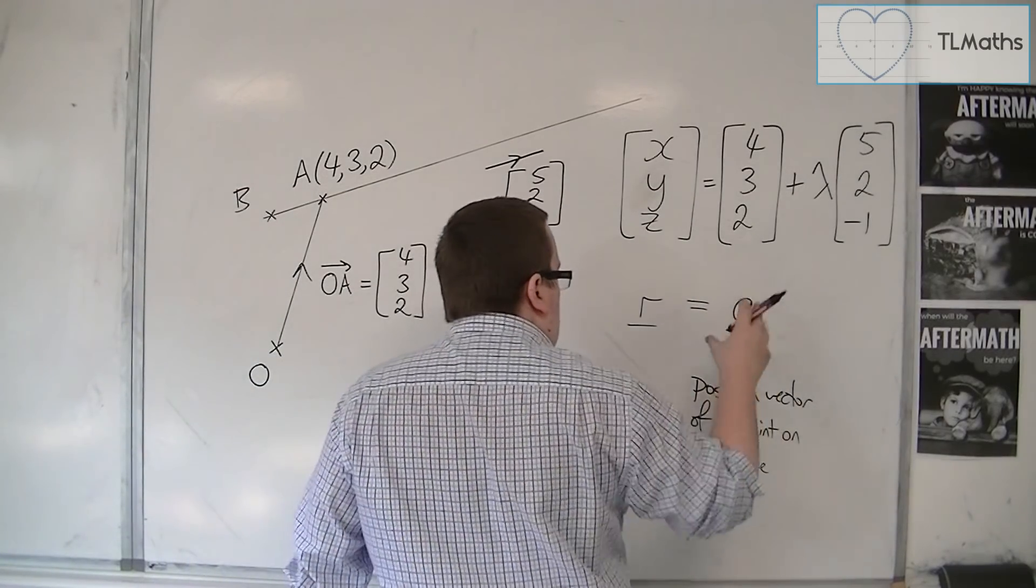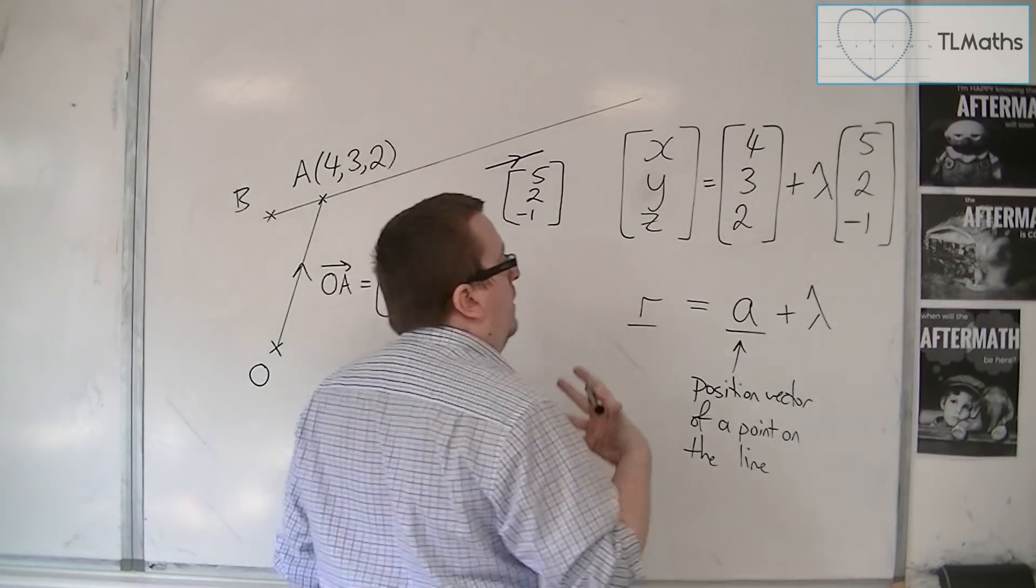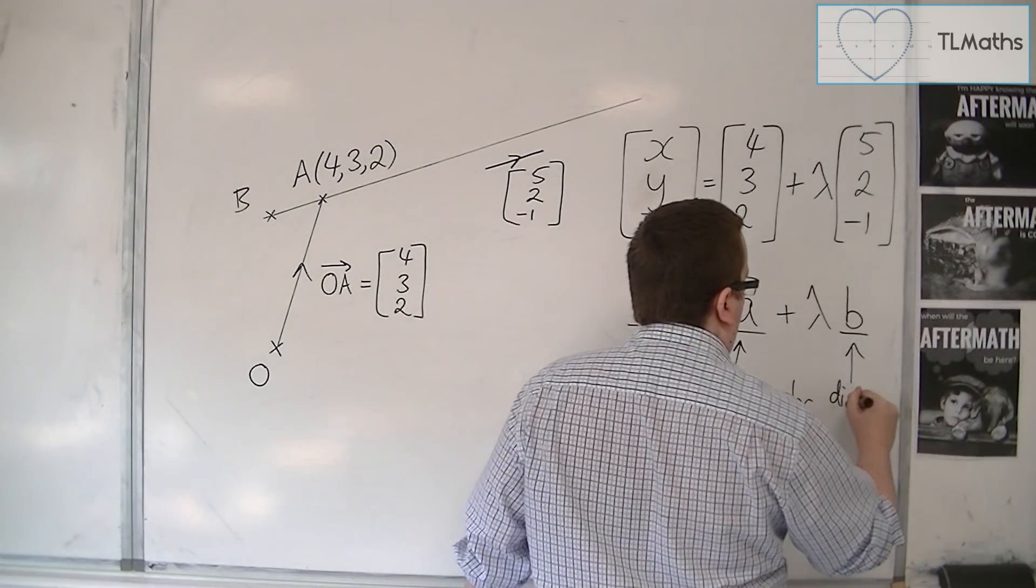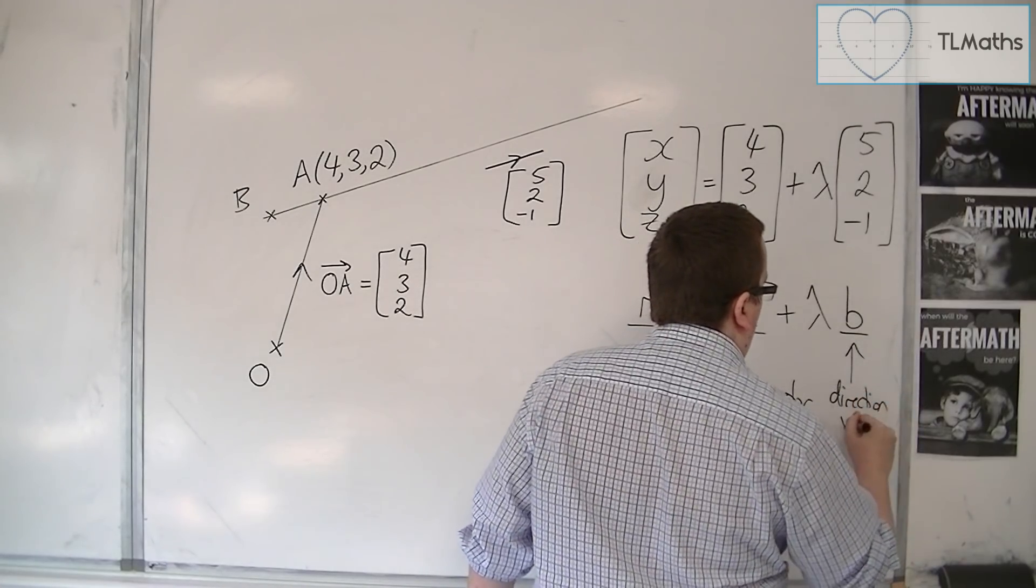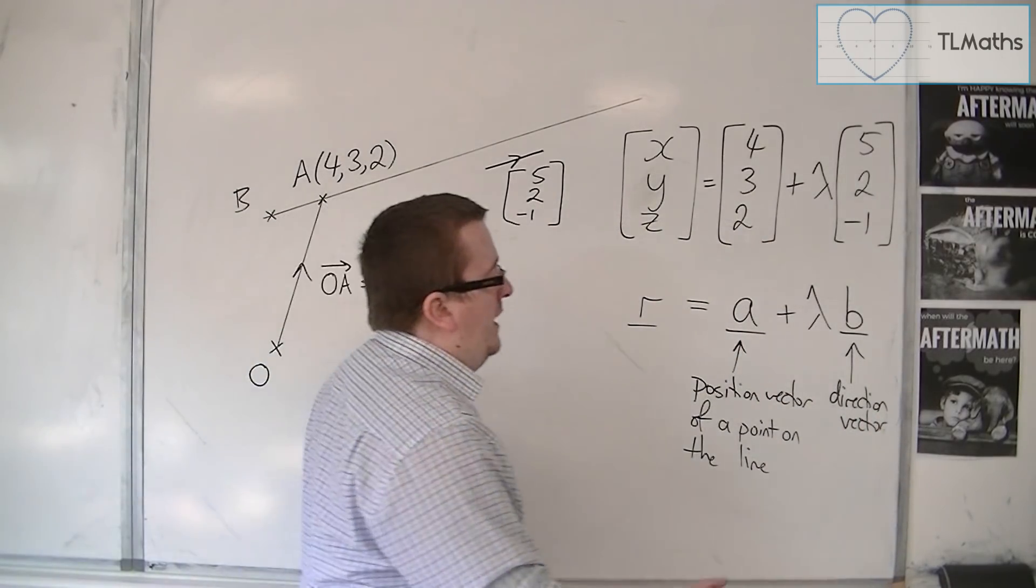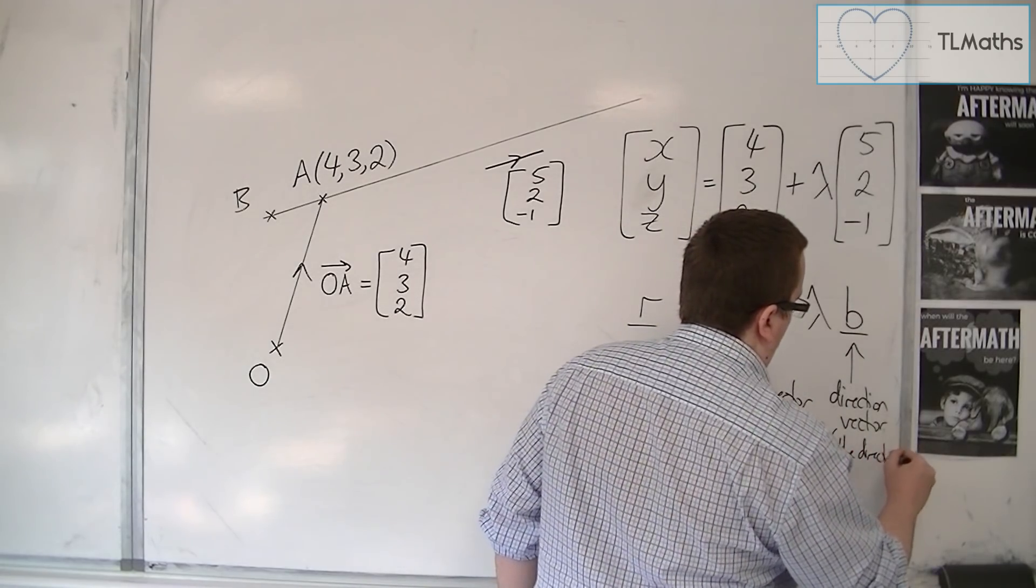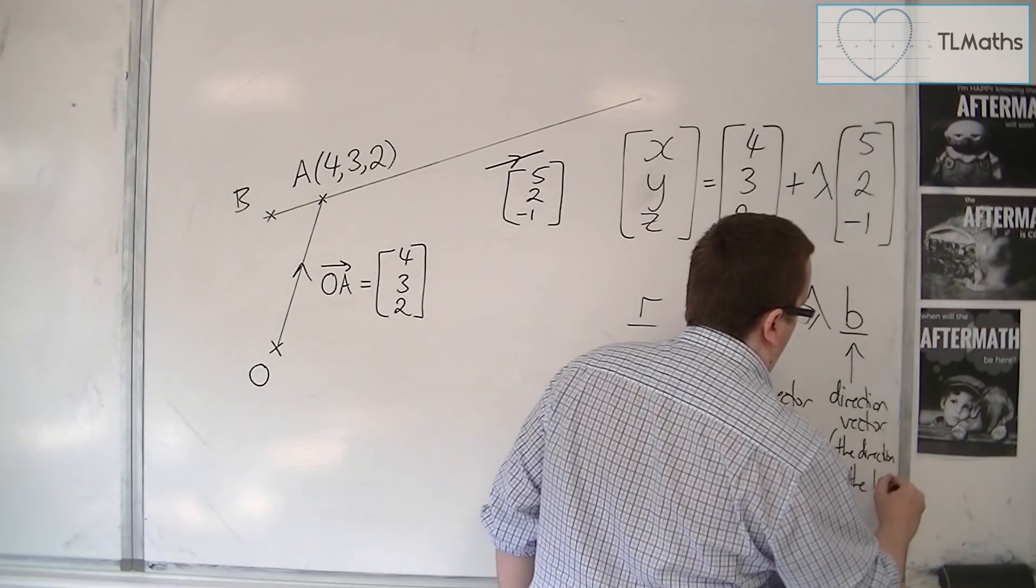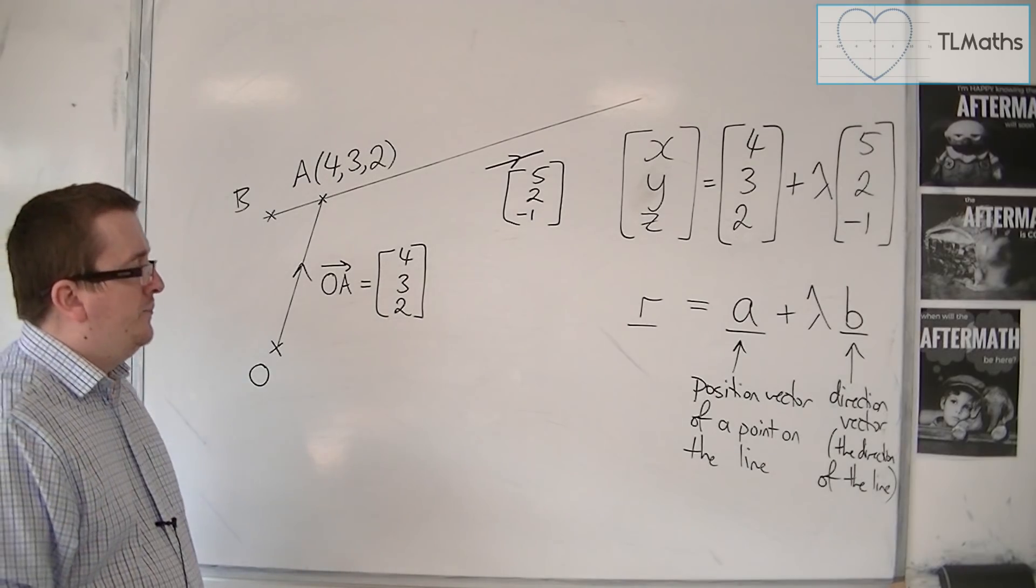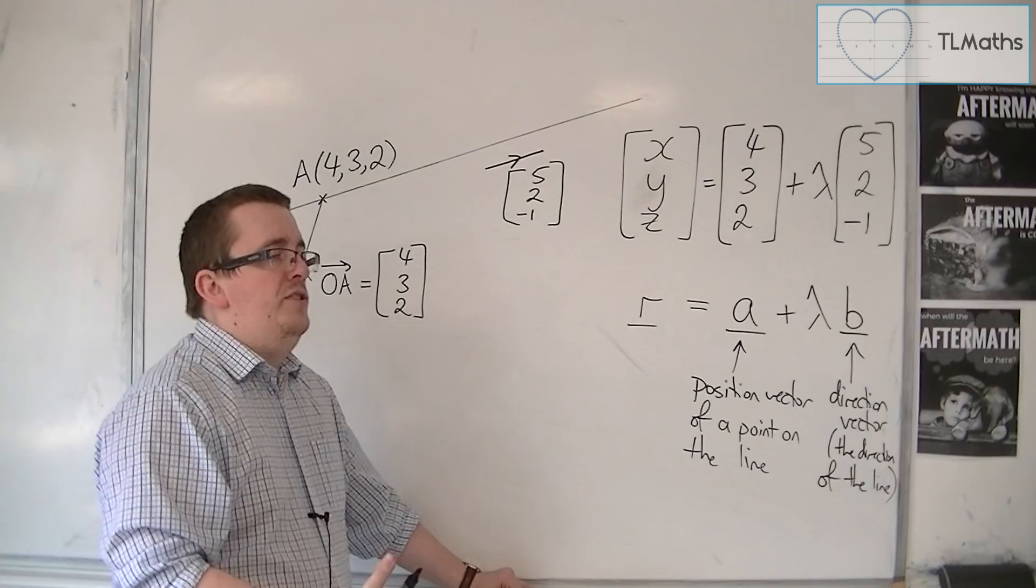So, you have A, the position vector, plus lambda, some multiple of a direction vector. So, the direction vector is this B, this is the direction of the line, and it links up with how we found the equation of a straight line in two dimensions.